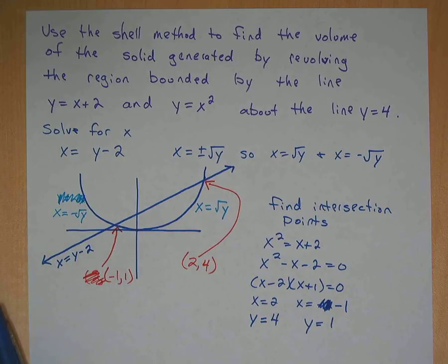On this problem we're going to use the shell method to find the volume of the solid generated by revolving the region bounded by the line y equals x plus 2 and the line y equals x squared about the line y equals 4.